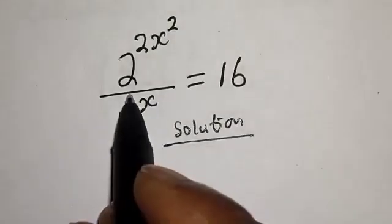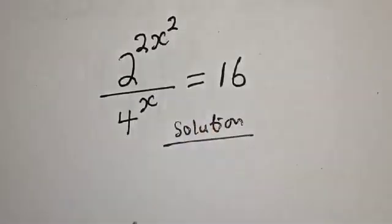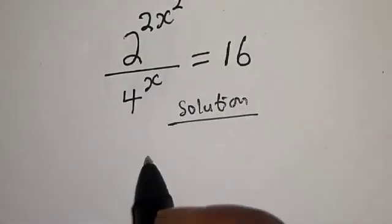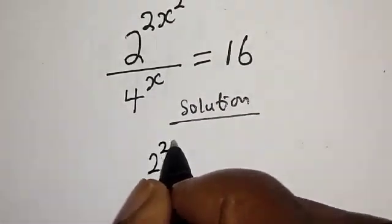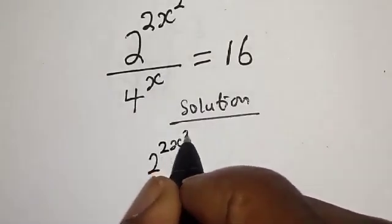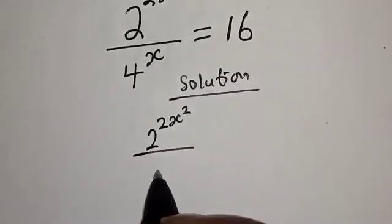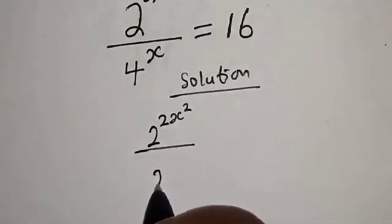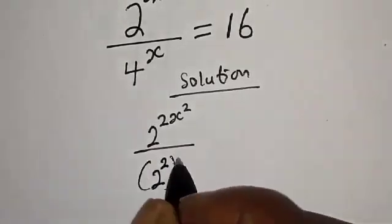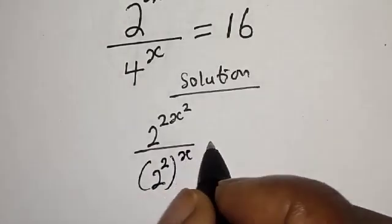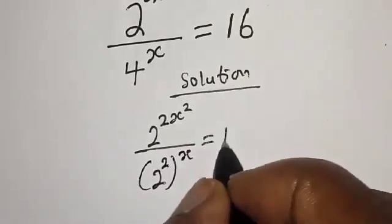We have the given equation: 2 raised to power 2s squared over 4 raised to power s. This can be rewritten as 2 raised to power 2s squared over 2 raised to power 2 to the power of s, which is equal to 16.